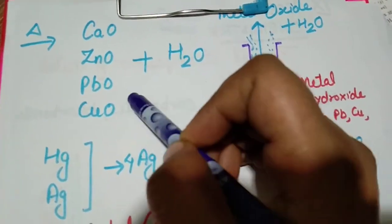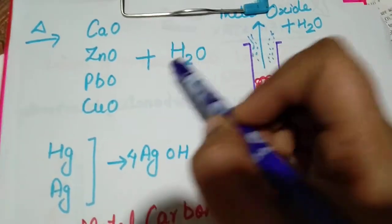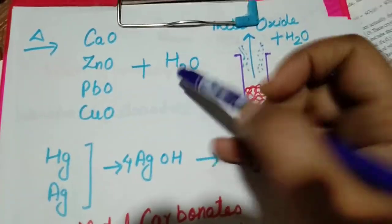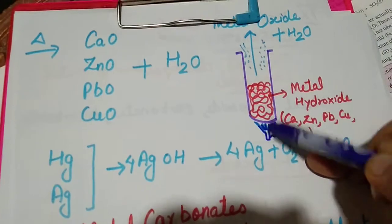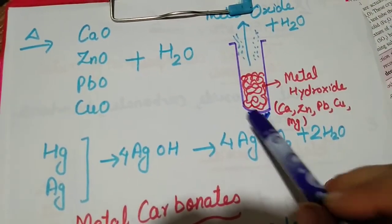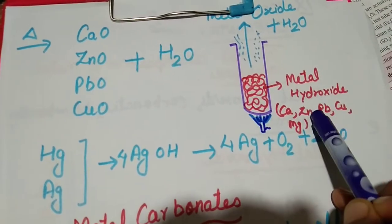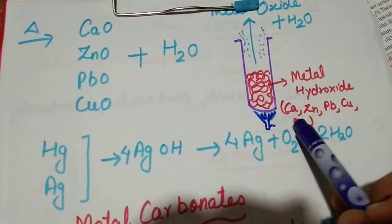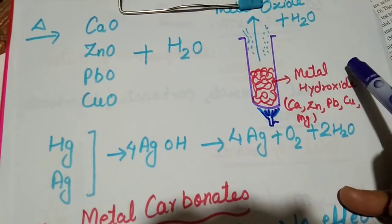H comes out from it and combines with oxygen to form water. So here I have drawn a rough diagram in which I have taken any metal hydroxide - calcium hydroxide, zinc hydroxide, lead, copper, magnesium, any metal hydroxide you take.